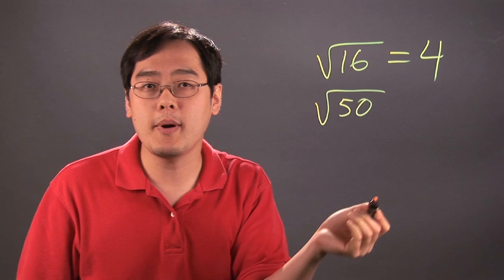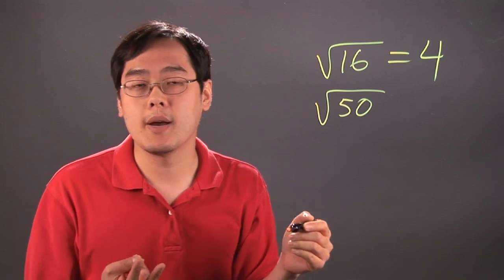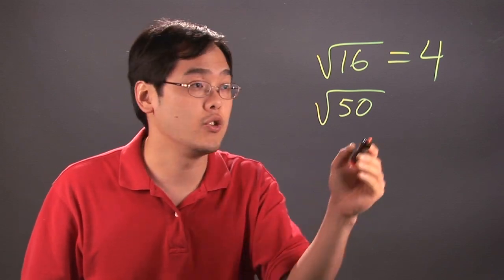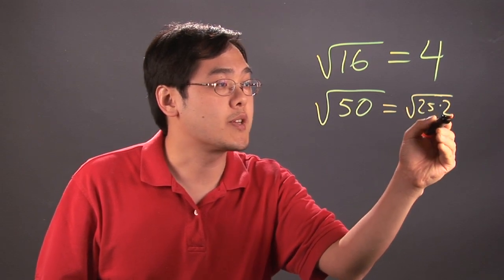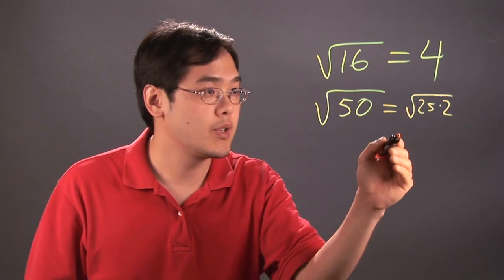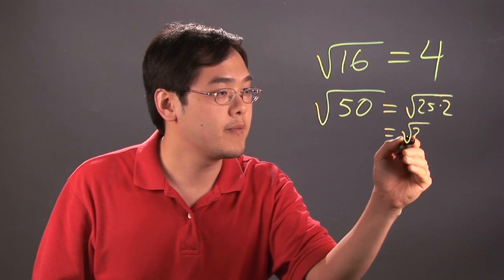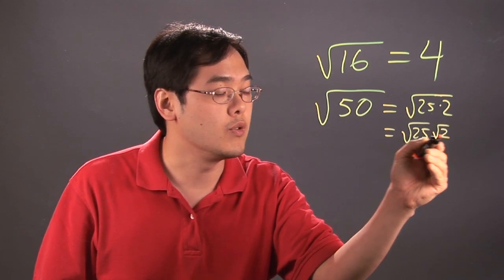For example, if you think about 50, two numbers that might come to mind would be 25 and 2. There's a rule in algebra that says you can break it up into two separate square roots. This would be square root of 25 times square root of 2.